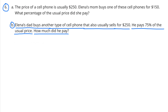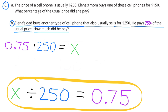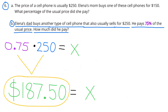Part B: Elena's dad buys another type of cell phone that also usually sells for $250. He pays 75% of the usual price. How much did he pay? The unknown price divided by 250 equals 75%, so X divided by 250 equals 75 hundredths. Multiplying 75 hundredths by 250 gives us the price he paid: $187.50. He paid $187.50, which was 75% of the usual price of the phone.